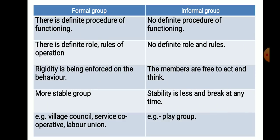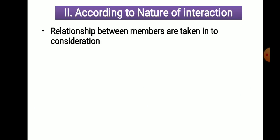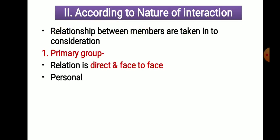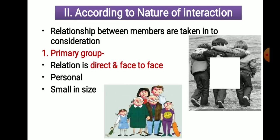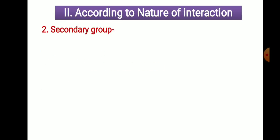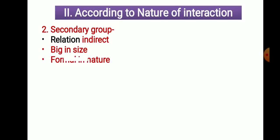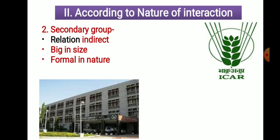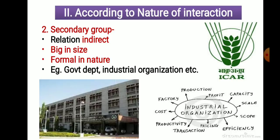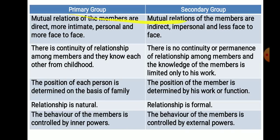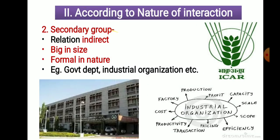We also discussed the difference between formal and informal groups, which is likely to appear in the final exam. Now, according to nature of interaction — interaction means the way of relationship maintained among members of a group — one type is the primary group, where face-to-face direct contact exists. Examples are friend circles and family. The second type is the secondary group, where relations are indirect. Examples are government and industrial organizations.